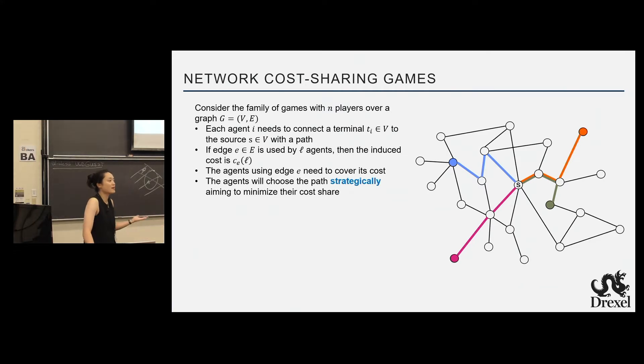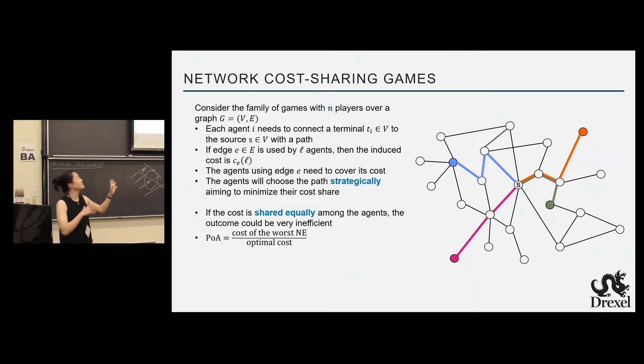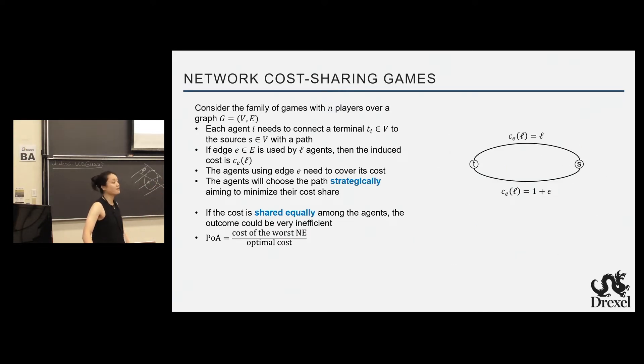Well, if the cost is shared equally among the agent, in fact, it would lead to a very inefficient outcome. So very hand-wavily and formally, we use price of anarchy to define the efficiency of an outcome. The price of anarchy is trying to capture the total cost people paid in the worst natural equilibrium, pure natural equilibrium, over the optimal social cost that we can achieve in this system. So just to provide a very simple example to demonstrate the points, think of you have an agent, all of them co-located at this terminal T and all of them are trying to connect to the source.